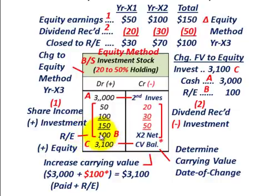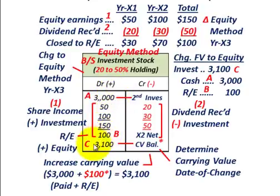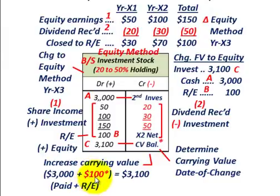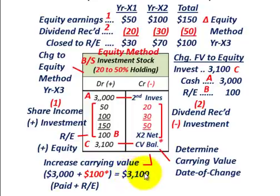That $100,000 net amount goes to retained earnings. So for year X2 — the end of the first two years — the net amount is $100,000. This increases our investment account from $3 million by this $100,000 up to $3,100,000. Our carrying value is the $3 million paid in cash plus the $100,000 difference between equity earnings and dividends received, for a total investment stock account balance of $3,100,000.